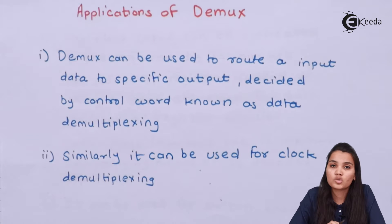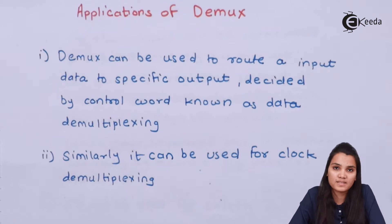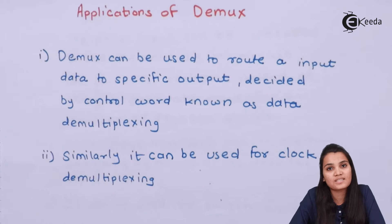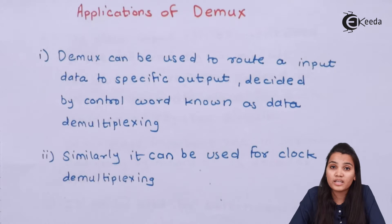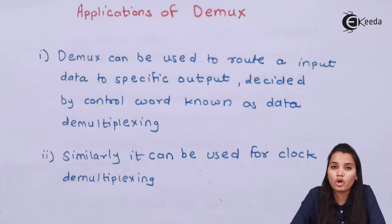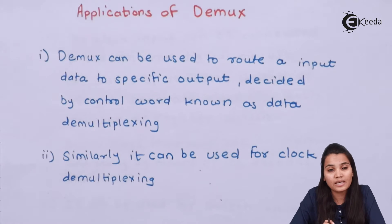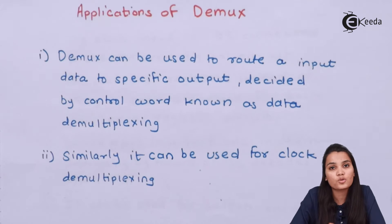The next application is clock demultiplexing. Every timer circuit or counter circuit requires a clock in digital electronics. Suppose there is a complex circuit where you require five to six counters as well as two to three other applications requiring timers. If you don't have a demultiplexer, you have to provide a different clock to each and every circuit. But if you use a demultiplexer, you can take one clock as input and distribute it to the other circuits using the demux.